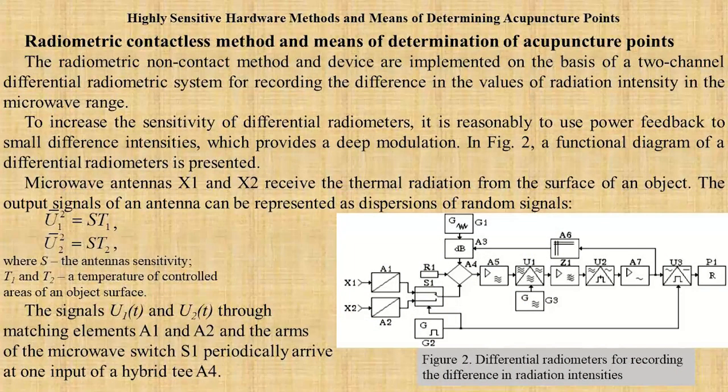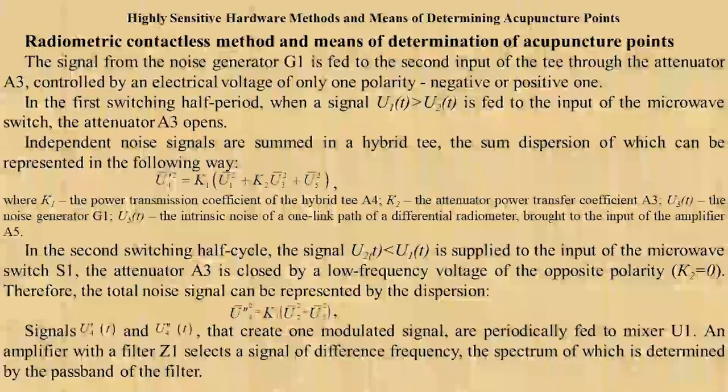Slide 9. Radiometric contactless method and means of determination of acupuncture points. The radiometric non-contact method and device are implemented on the basis of a two-channel differential radiometric system for recording the differences in the values of radiation intensity in the microwave range. Slide 10.